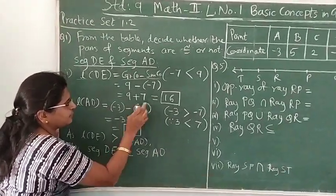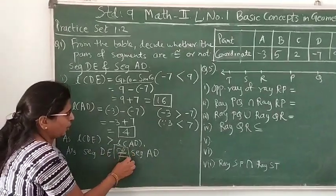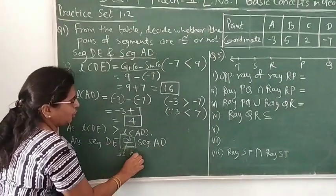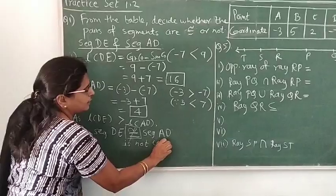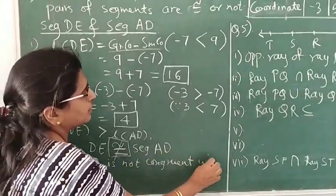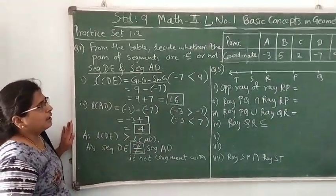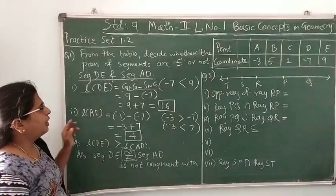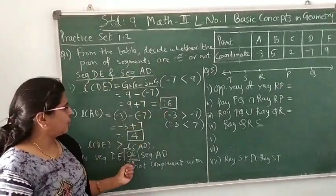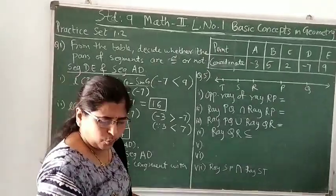If we find both lengths are equal, then we can say these two segments are congruent. Either you can use this symbol or you can write in words: segment DE is not congruent to segment AD. Like this we can solve question number 1. There are three pairs. You have to find the lengths of the given segments of the given pair. If they are equal, they are congruent. If not equal, they are not congruent.